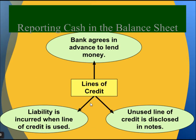Lines of credit: A bank agrees in advance to lend money. A liability is incurred when the line of credit is used. Unused lines of credit are disclosed in the notes to the financial statements.